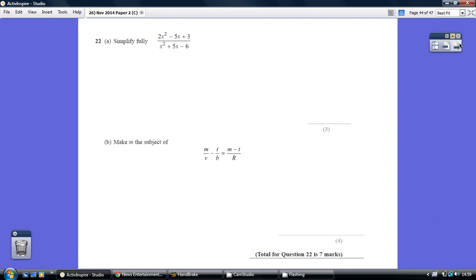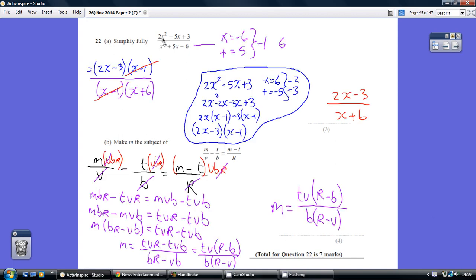Question 22, part A. When we've got a quadratic on the top and a quadratic on the bottom and we're able to simplify it, you basically need to factorise the top, factorise the bottom, and hope that one of the brackets is the same so that can be cancelled out, leaving you with the remaining brackets as the answer.